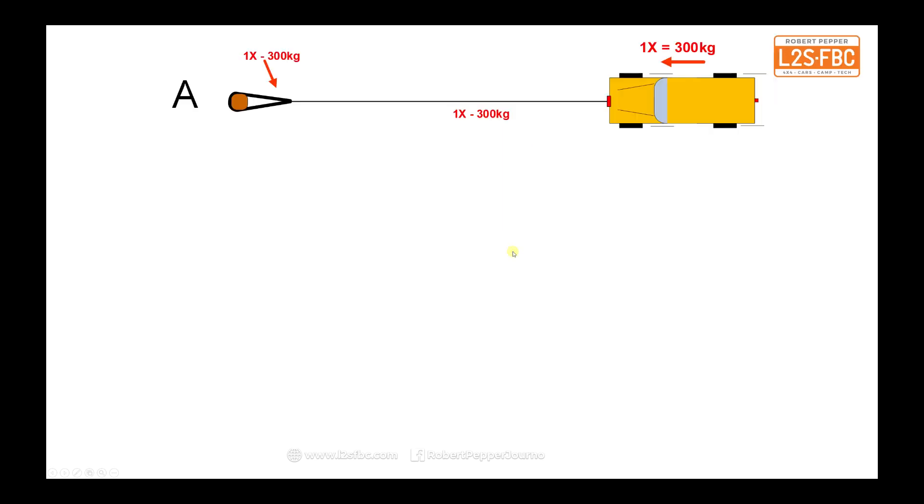But before we do that, let's go through some of the basics. Here we've got a stuck vehicle, the casualty, and we'll assume it's going to take a force of 300kg to move it. That's pretty straightforward, the winch will produce a force of 300kg, which should be in newtons, but we'll run with kg because that's what people tend to measure this stuff in.